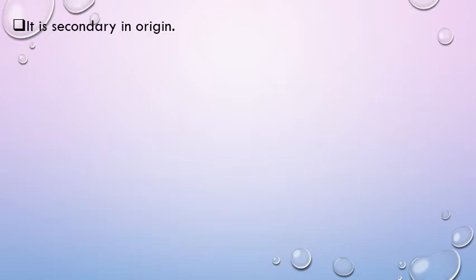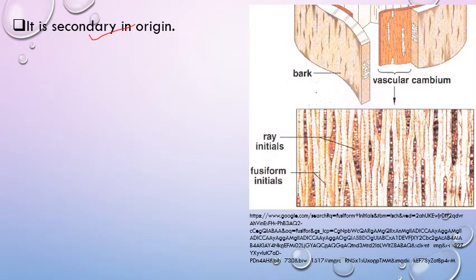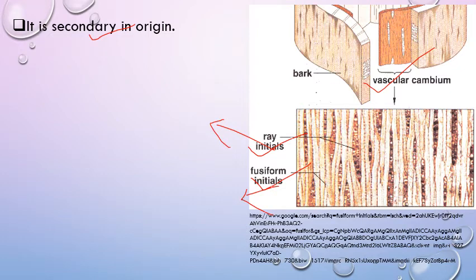Vascular cambium is secondary in origin because intrafascicular cambium is already present, and after that the second strip — interfascicular cambium — is formed. Both strips combine to form vascular cambium. Vascular cambium consists of two types of initials: ray initials and fusiform initials. Fusiform initials are responsible for secondary xylem and secondary phloem; ray initials form xylem rays and phloem rays that help in radial conduction.